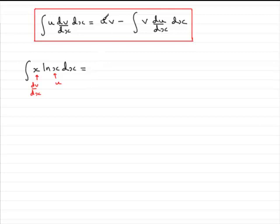So, according to the formula, it's u, which is natural log of x. So, just put that in, natural log of x. Make sure you put it in brackets though, okay?